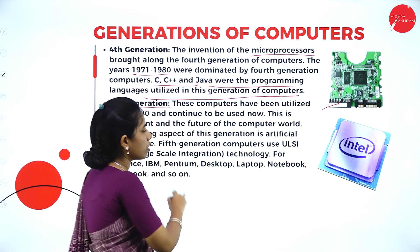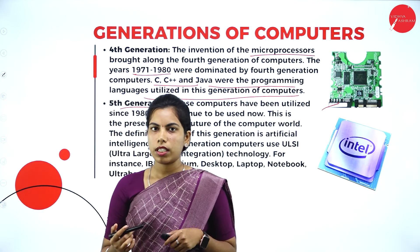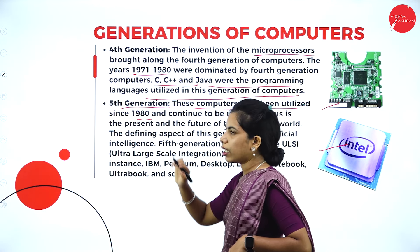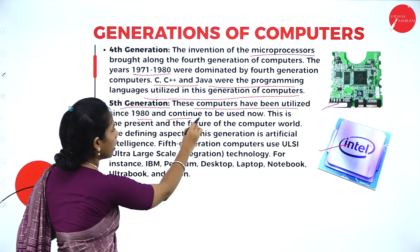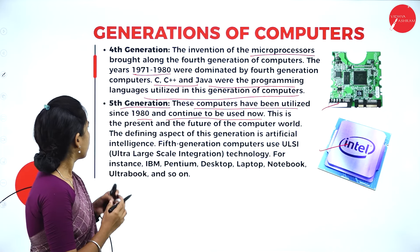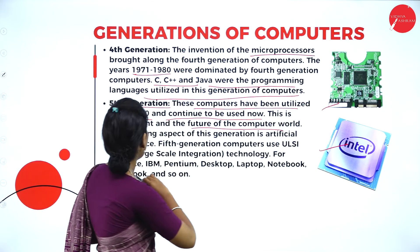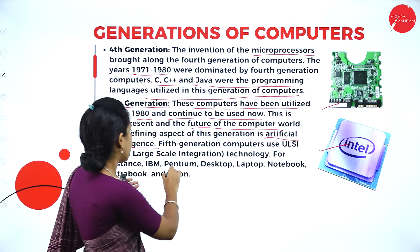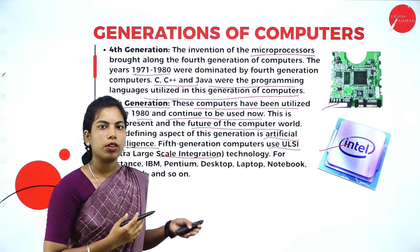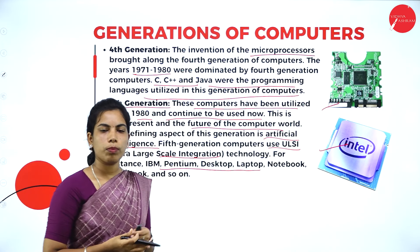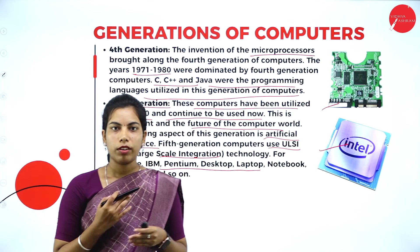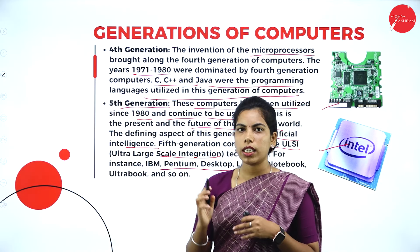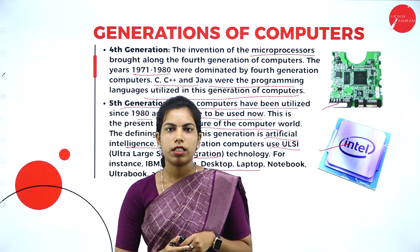The last generation is the fifth generation - artificial intelligence. These computers have been utilized since 1980 and continue to be used now. We are currently in the fifth generation, which is the present and also the future of the computer world. The key technology of this generation is artificial intelligence and Ultra Large Scale Integration (ULSI). Presently we use notebooks, laptops, and advanced processors like i7, i5, and i3. These are all five generations of computers.